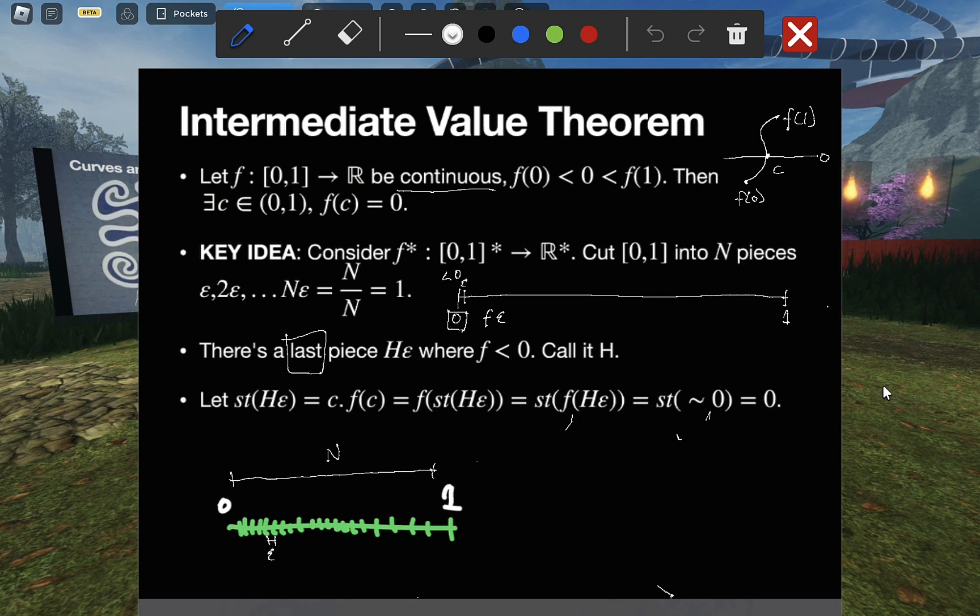continuity means that if two points are infinitely close, then their images must be infinitely close. The idea being that continuity cannot pull apart points that are close by. So while we have no idea what f of epsilon is, we know that it will be infinitely close to zero. And f of two epsilon will also be infinitely close, and so on.